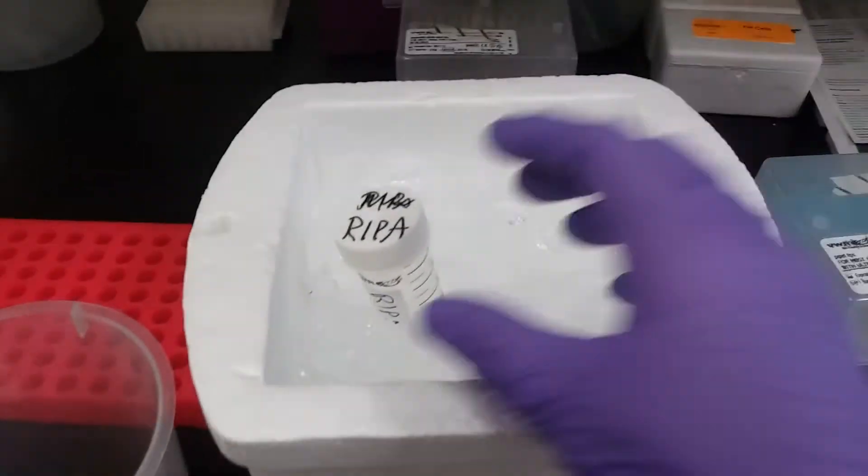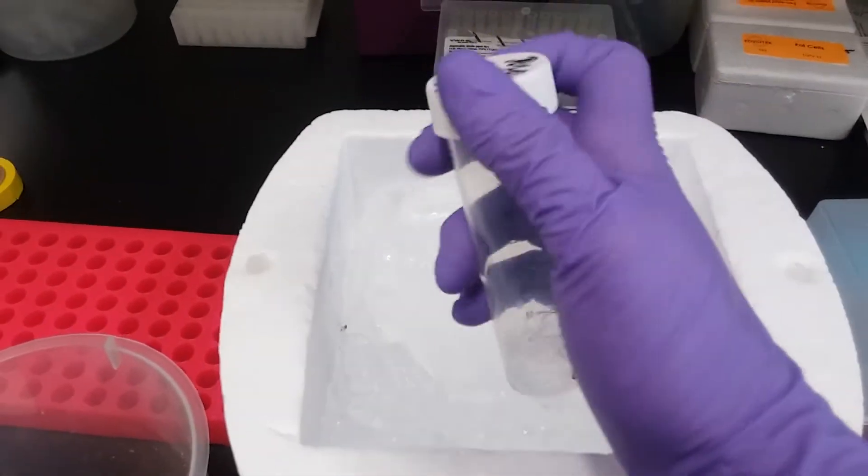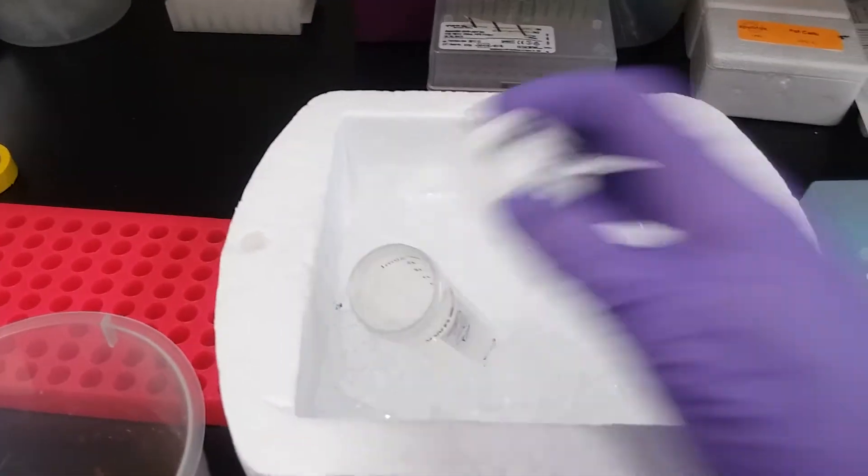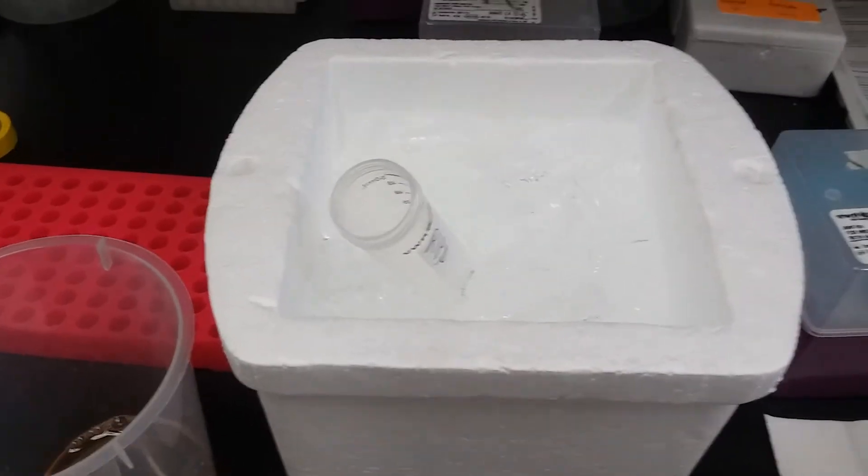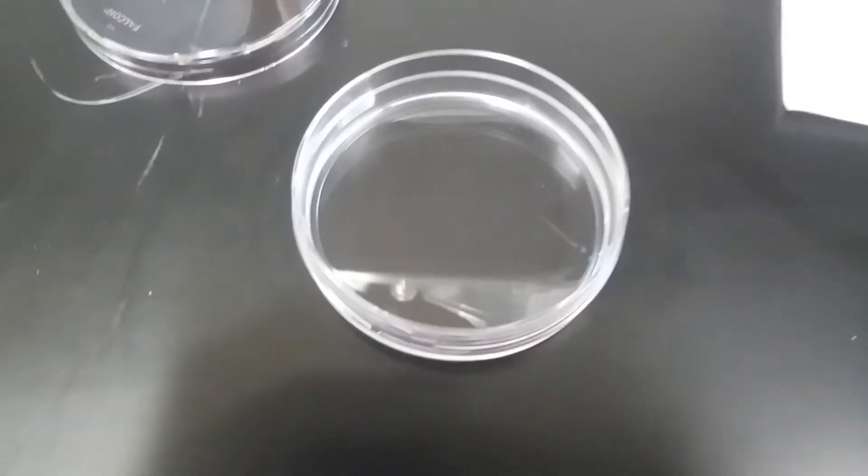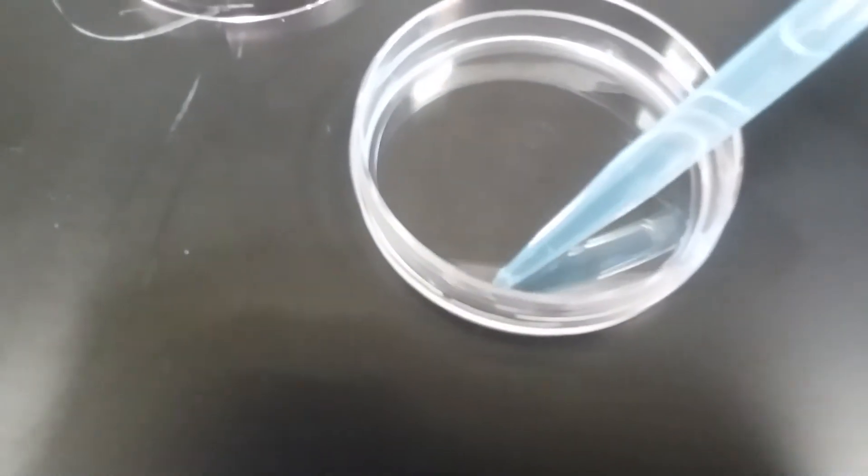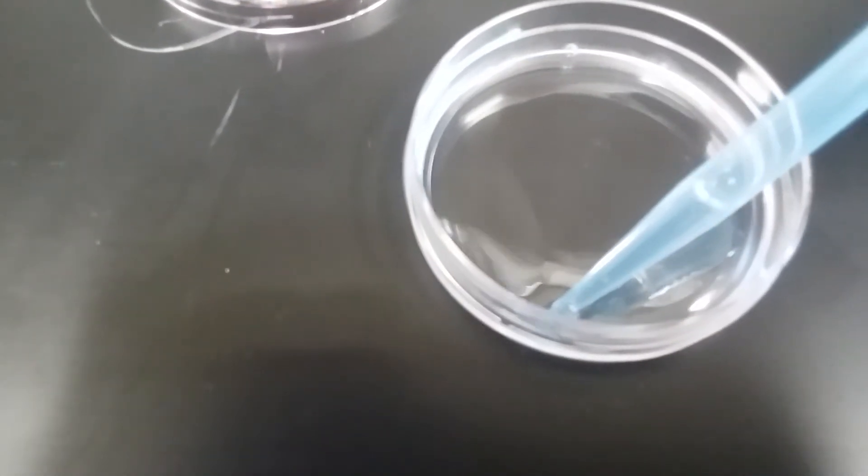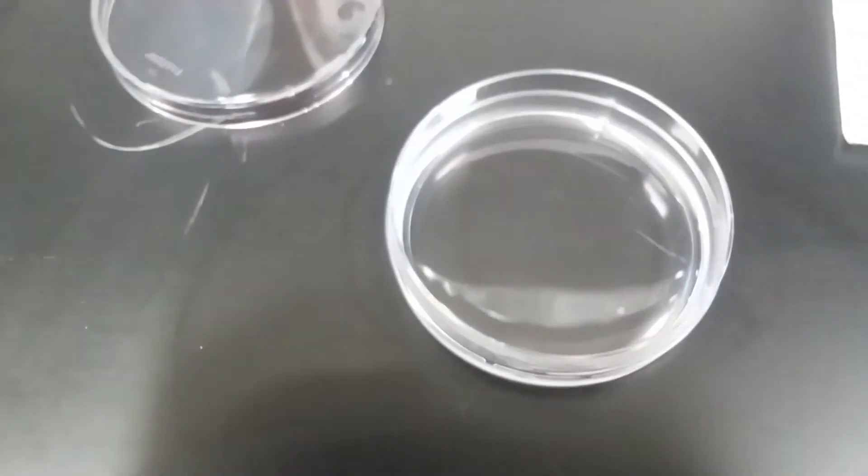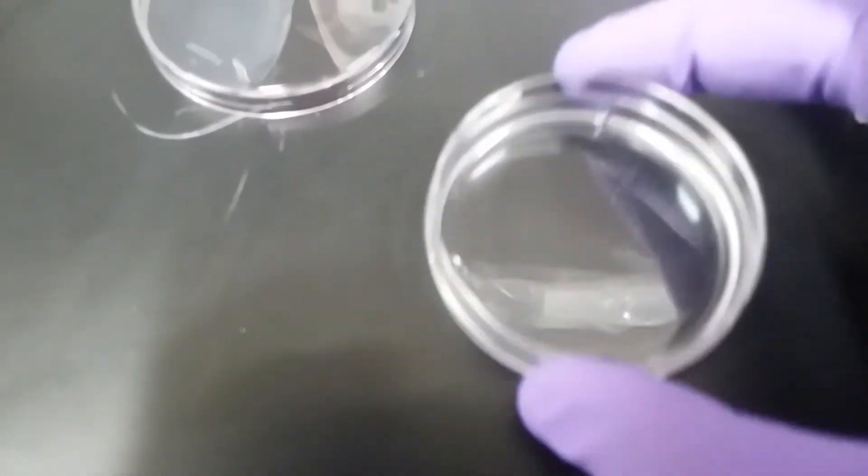And now I'm going to grab 900 microliters of my RIPA from my cold, and I'm going to dispense that onto my cells. When I put this onto the cells, I like to drizzle it on the side. I don't want to directly put it into the middle. I end up making a bunch of bubbles, so I'm going to put it onto the side, and I'm going to swirl it.